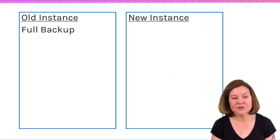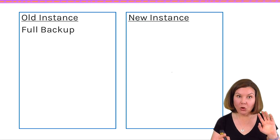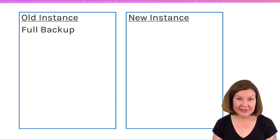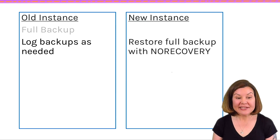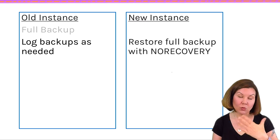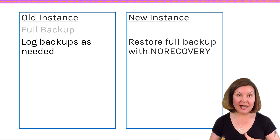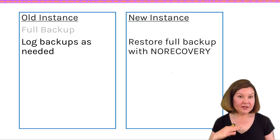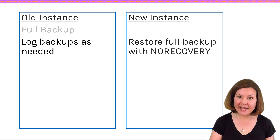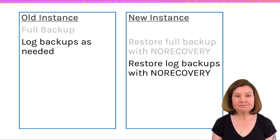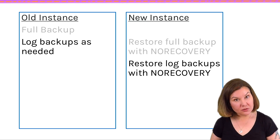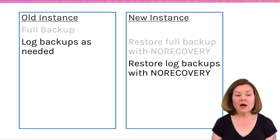A lot of people don't learn to do it because they haven't run into that situation, but it's still really useful for migrations. Here's the way the sequence goes. On the old instance, we do our full backup and let it complete. When the full backup completes, we start restoring it to the new instance — but we do it with no recovery, so that we can apply log backups to the new instance afterwards. It may take a while for that restore to run, so on the old instance we're still letting activity happen and we take transaction log backups as needed.